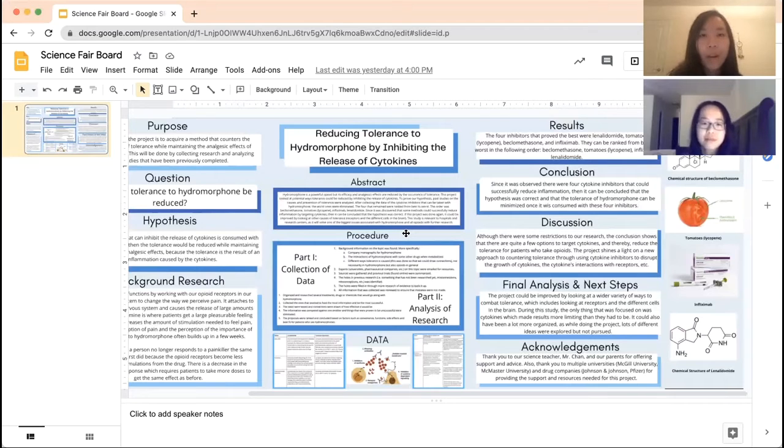We also found a study that stated that scientists also assumed that all opioids interact with the same part of the brain which means that since morphine is an opioid and hydromorphone is one as well, they should both interact with the same parts of the brain which means that they all interact with cytokines.